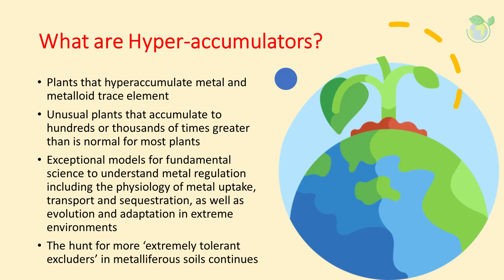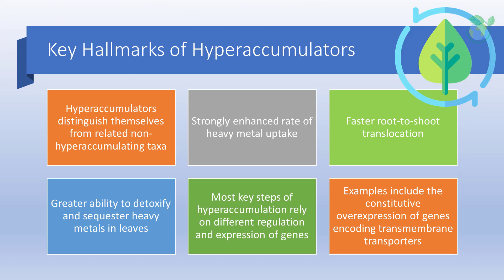Over the past decade as well as in the future, ongoing efforts to hunt for more extremely tolerant excluders in metalliferous soils continue. Hyperaccumulators distinguish themselves from related non-hyperaccumulating taxa with key hallmarks, including a strongly enhanced rate of heavy metal uptake, a faster root-to-shoot translocation, and a greater ability to detoxify and sequester heavy metals in leaves. Most key steps rely on different regulation and expression of genes, with constitutive overexpression of genes encoding transmembrane transporters such as members of the ZIP, HMA, MATE, YSL, and MTP families.